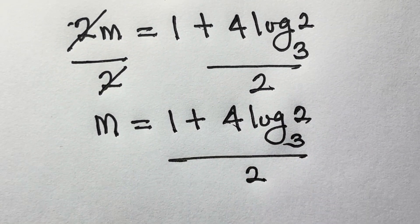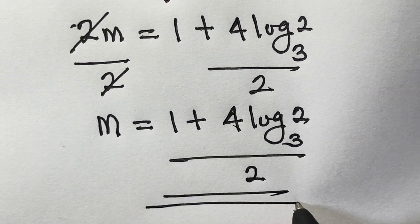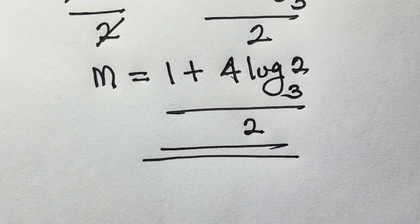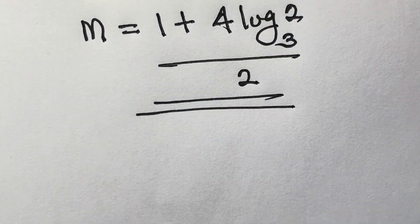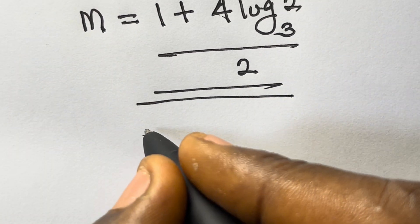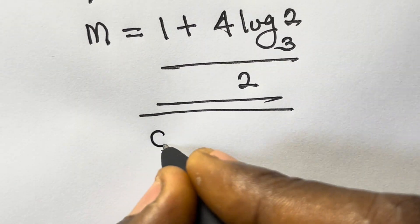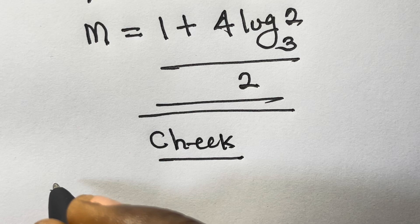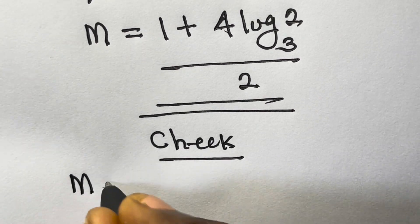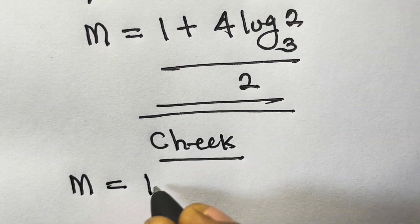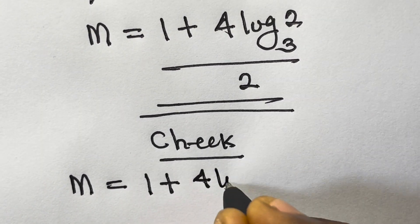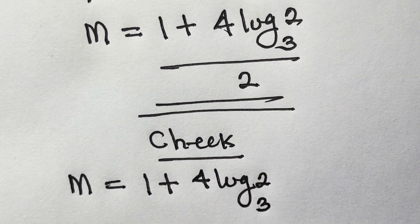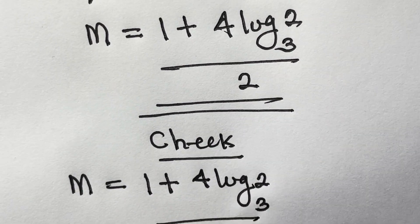So our answer is m equals 1 plus 4 log base 3 of 2, all divided by 2. Now if you want to verify this, let's check. We have m equals 1 plus 4 log base 3 of 2, divided by 2.